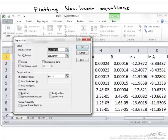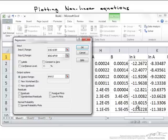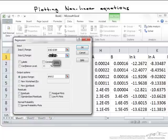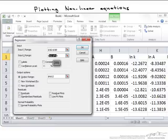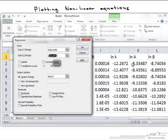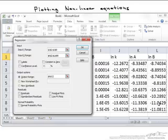So our Y range here is going to be this ln of k. Then the next thing that we want to put in here is our X range. And again, let's go back to our equation. Here we have two X's. We have the ln of A and the ln of B. So what we're going to have to do here is select both of those columns for our A and B ranges.